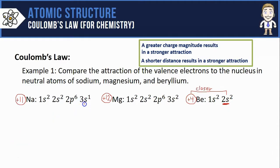That's compared to sodium and magnesium's valence electrons both in the third energy level and they're going to be further away. That shorter distance in the beryllium atom is going to suggest a stronger attraction between its valence electrons and the nucleus.